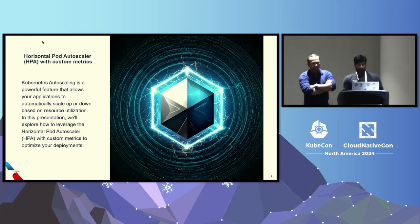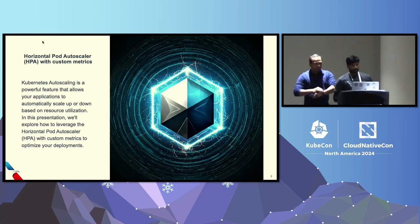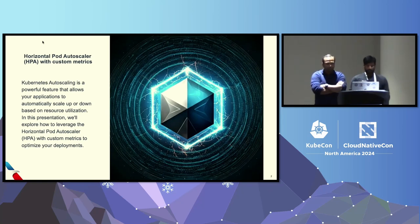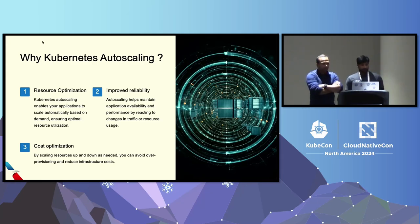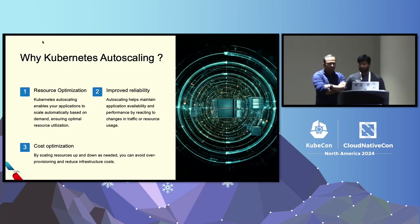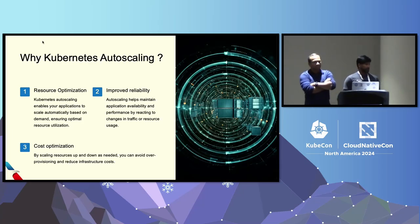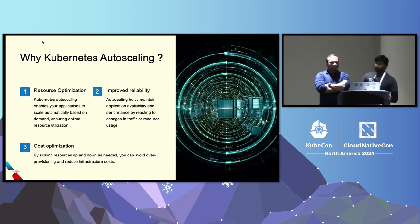Horizontal pod autoscaler with custom metrics — autoscaling is a powerful feature in the container orchestration world that automatically scales applications up and down based on resource utilization. We have three types: cluster autoscalers, horizontal pod scalers, and vertical pod scalers. We use Kubernetes autoscaling for resource optimization, enabling applications to scale based on demand, ensuring optimal resource utilization, reliability, and improved application performance based on traffic and resource needs.